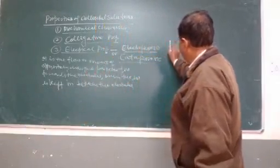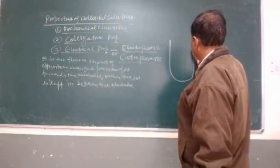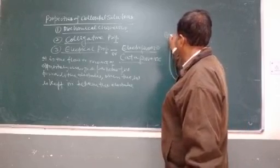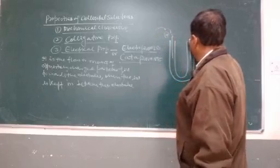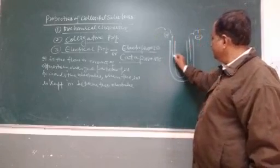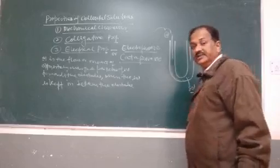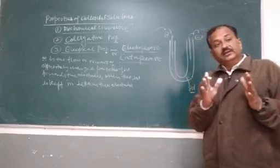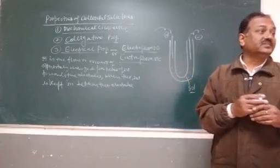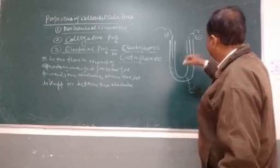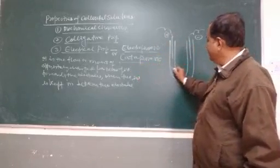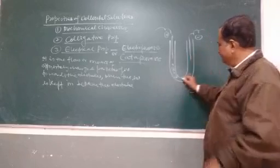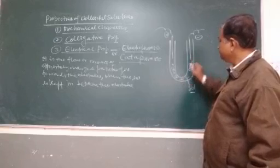If we take a glass tube with an anode on one side and a cathode on the other, and pass high potential difference through the sol, the sol particles undergo dissociation. The negatively charged particles move toward the anode, and the positively charged particles move toward the cathode. There is accumulation of particles at each respective electrode.